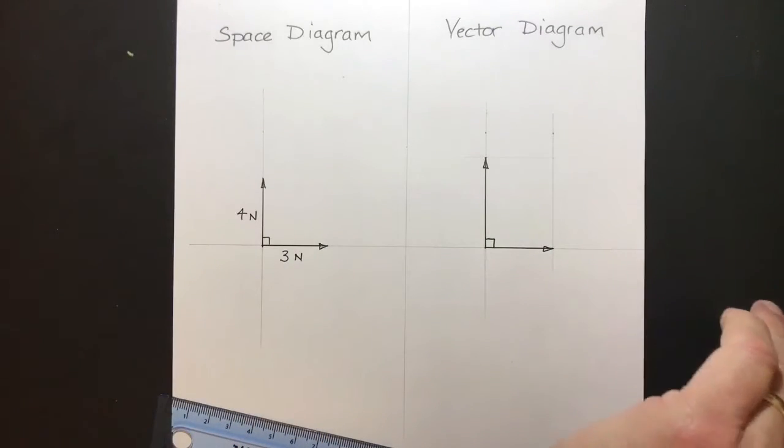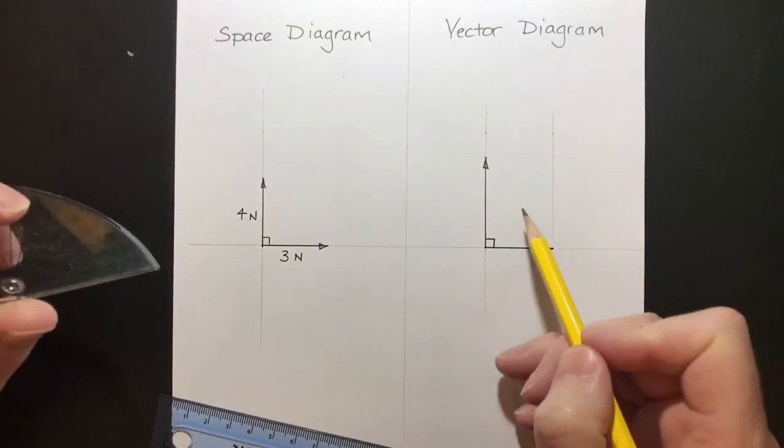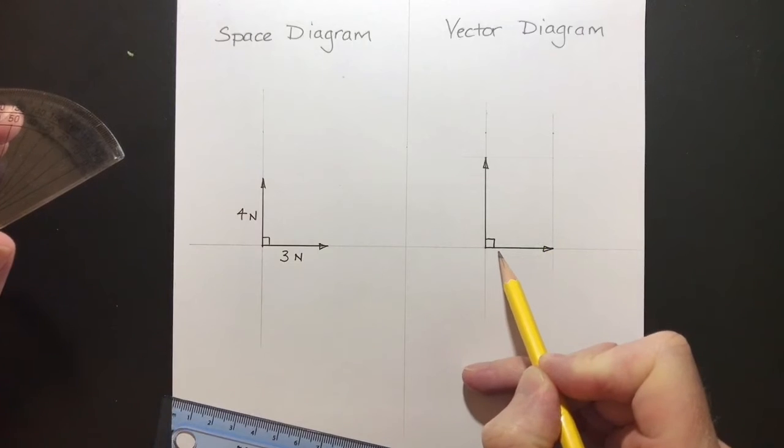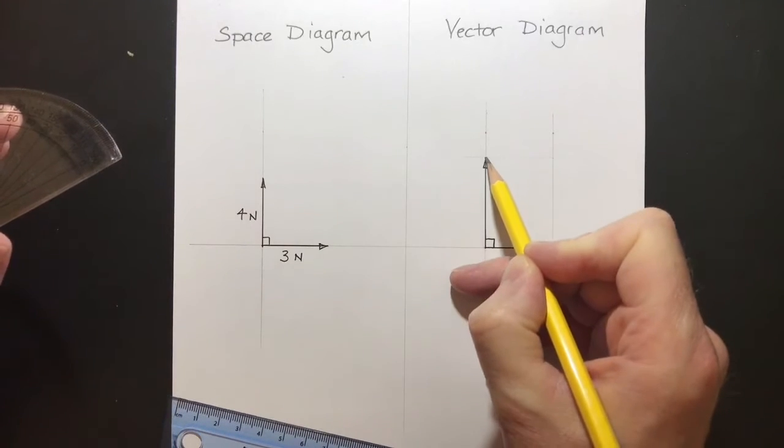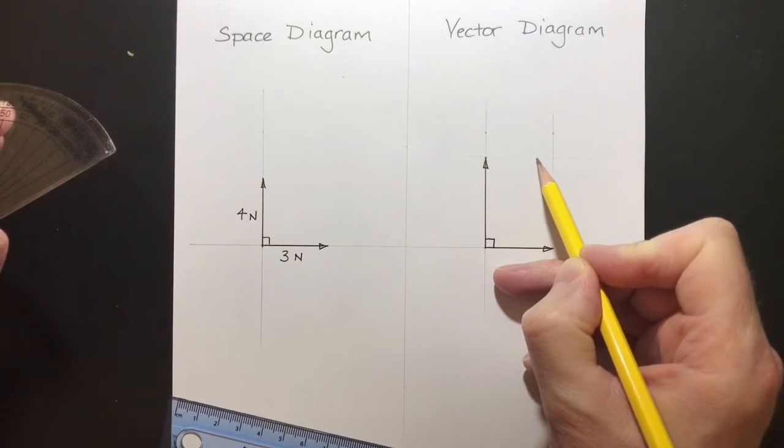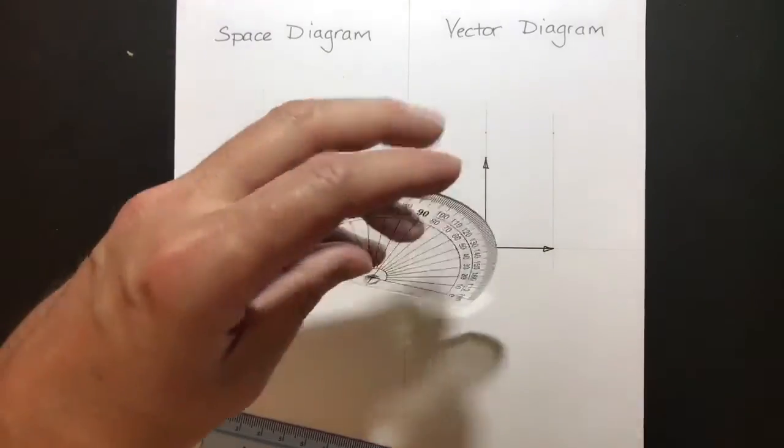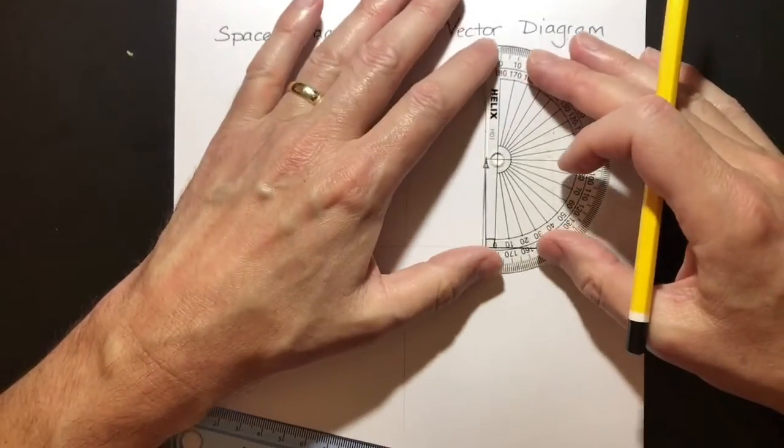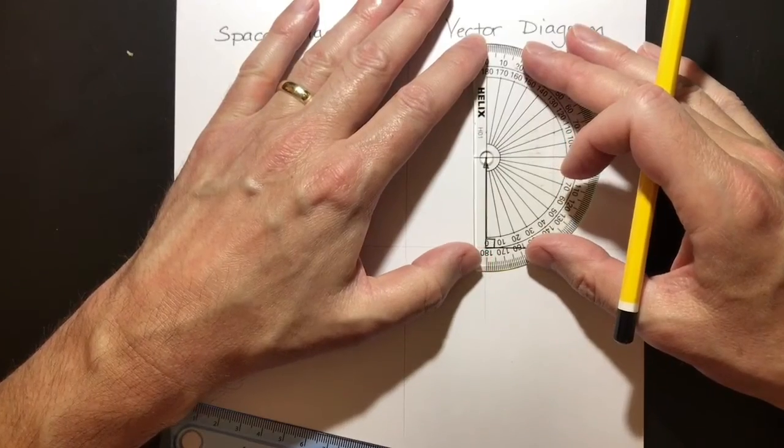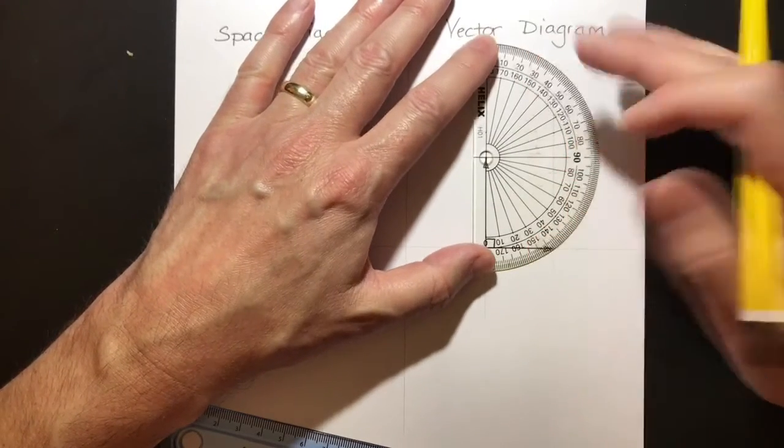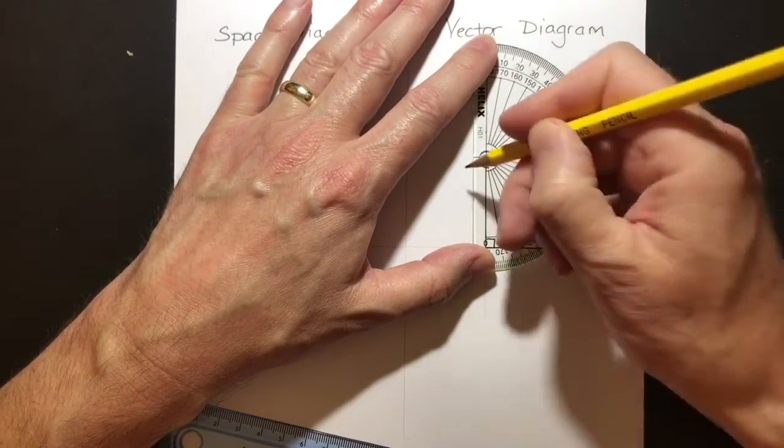Now, I do the same thing again and I draw a parallel line. I want a line parallel to this one, going from the top of this 4 Newton vector across there. Again, here we go. I can either do it this way by marking it off and drawing across,